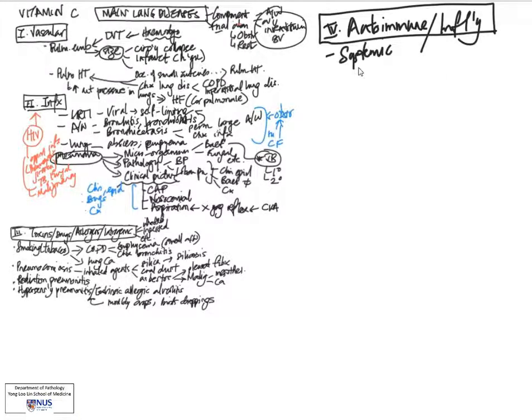Within this category includes some systemic diseases of which lung is a part of, and these will be systemic autoimmune conditions such as SLE, systemic lupus erythematosus, rheumatoid arthritis, and systemic sclerosis.